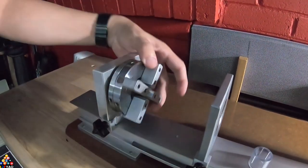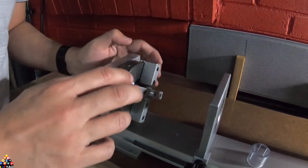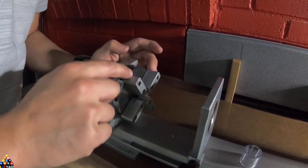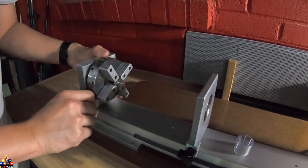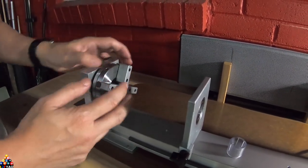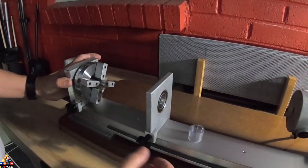One advantage of this cue lathe, it also comes with a four jaw chuck. This is where you can actually loosen it and remove it. This will actually hold the butt of a cue if you're doing joint work in the front.